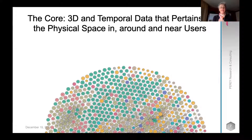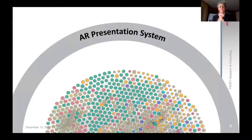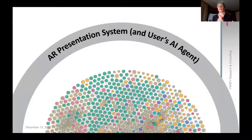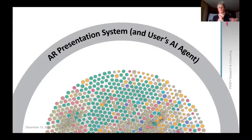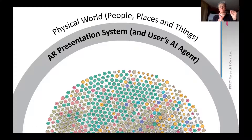Users interact with this 3D data using an AR presentation system. We're quite familiar with those systems — they encompass artificial intelligence to help the user use the world intelligently. There are sensors and speakers, a central processing unit, graphic processing units, user interface elements, personalization, the AR execution engine, and renderers. These help us to see things in the physical world in context.